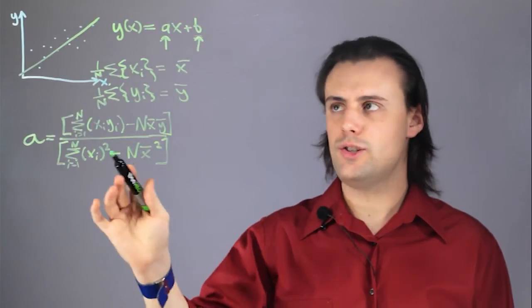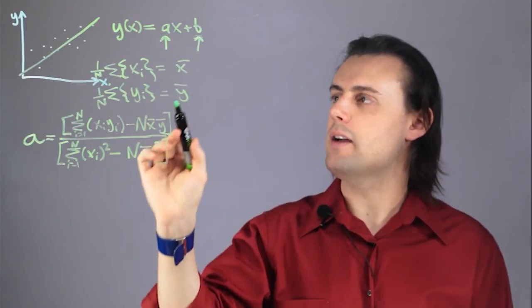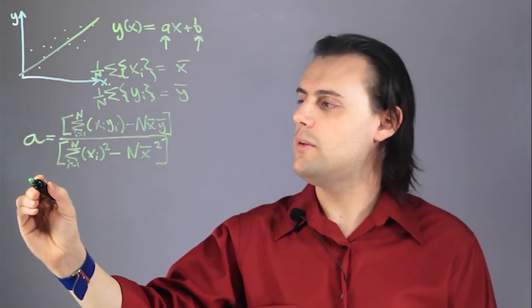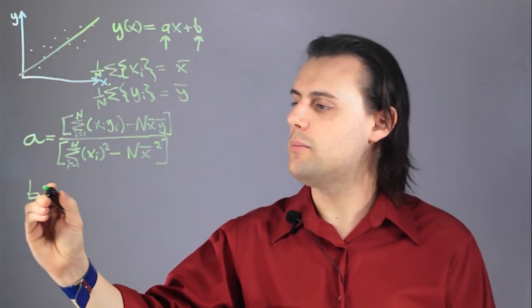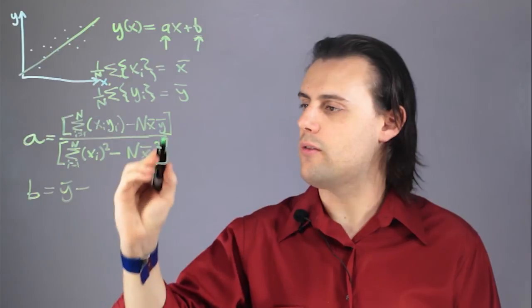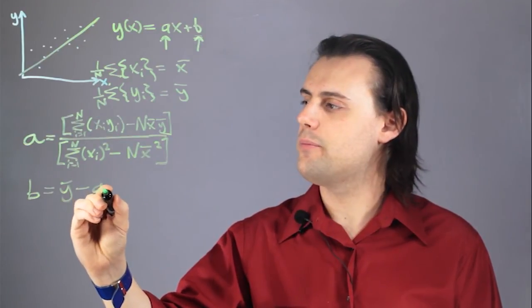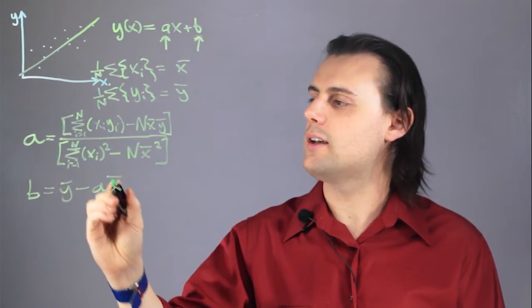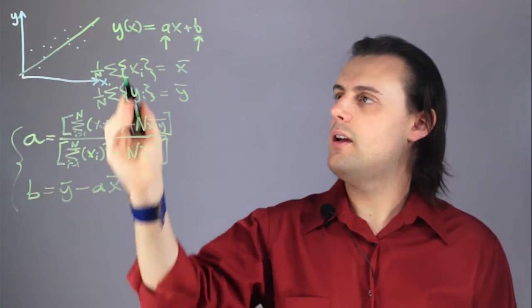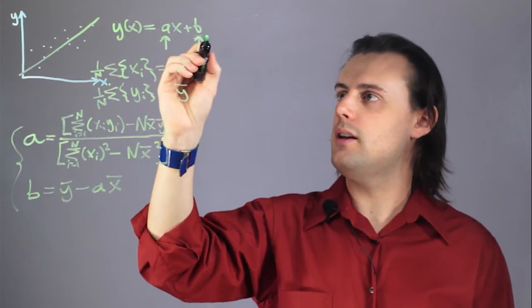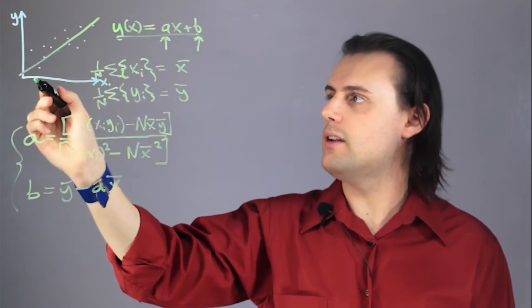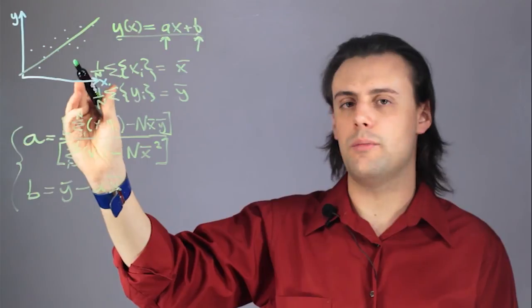This is the equation you use to determine a for your line of best fit. Then b, your y-intercept, would simply be the average in y minus whatever number you get for a, times the average in x. Now you have a and b, and you just plug them in and you have an equation that represents a line of best fit for a set of data points.